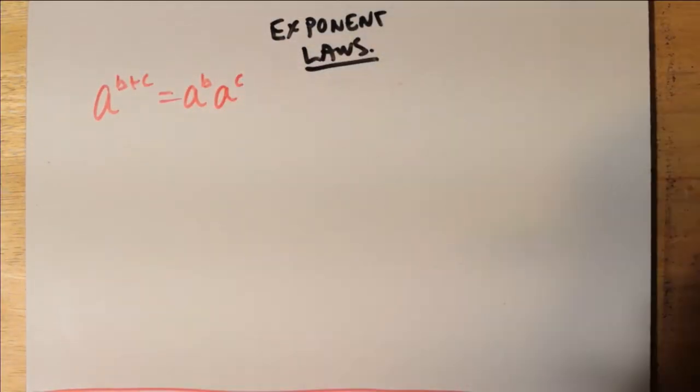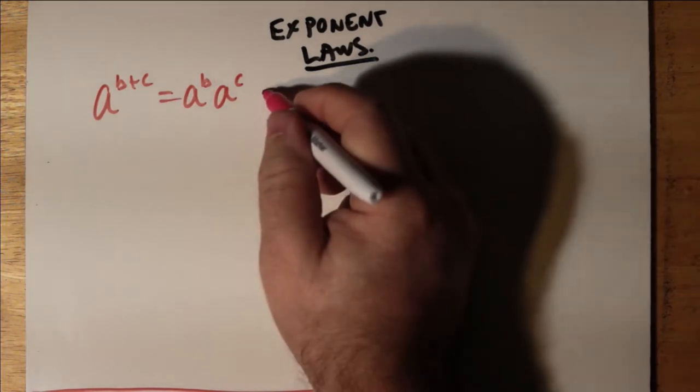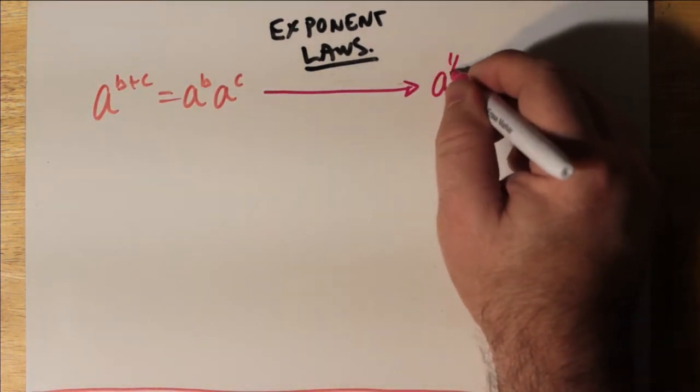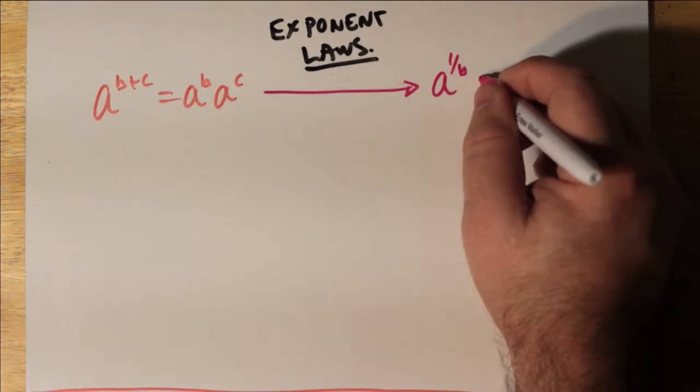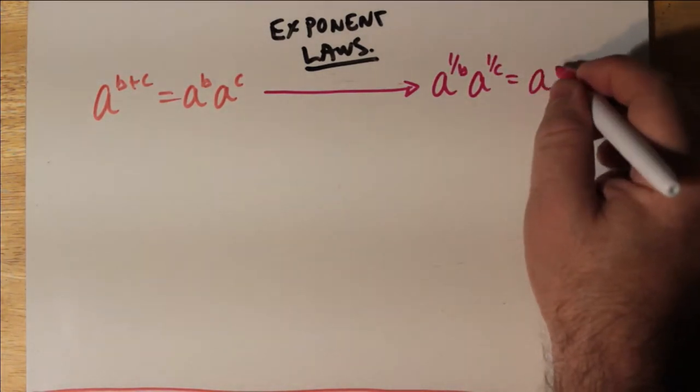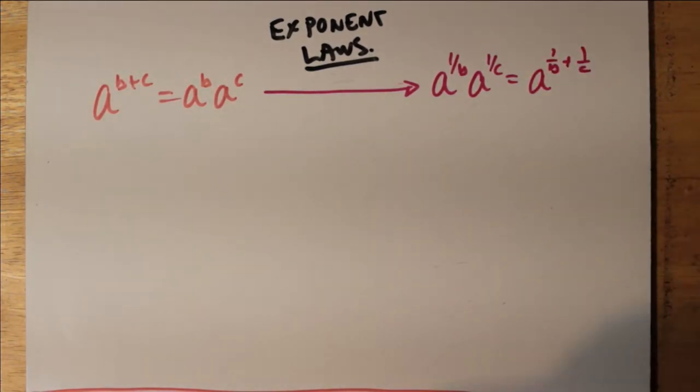So just to reinforce, a to the b plus c is a to the b times a to the c. And what's true about b and c is true if b and c are even fractions. So a to the 1 over b times a to the 1 over c is like saying a to the 1 over b plus 1 over c.